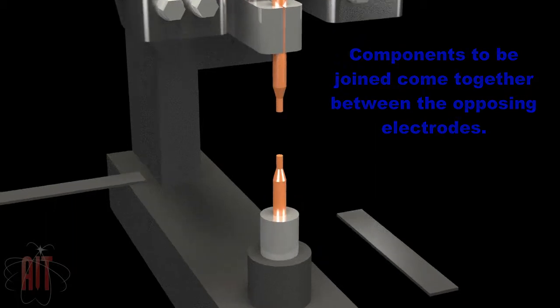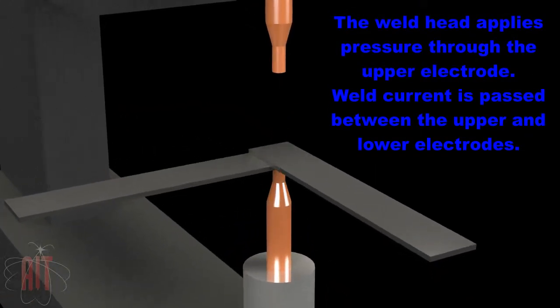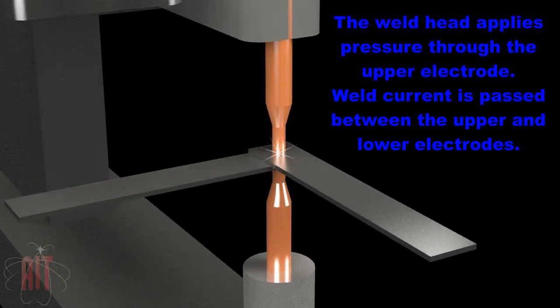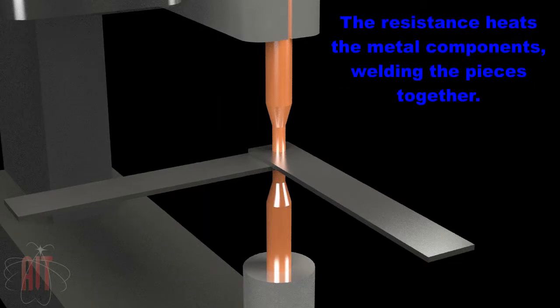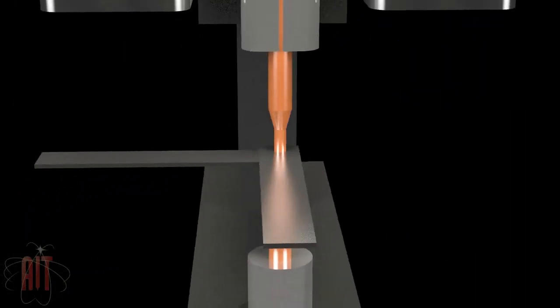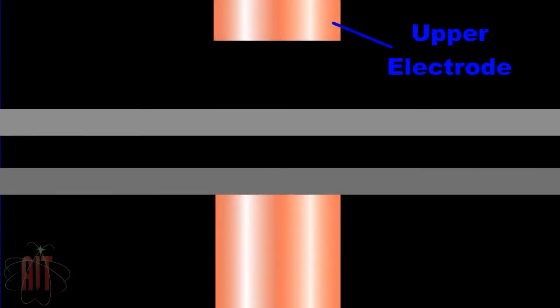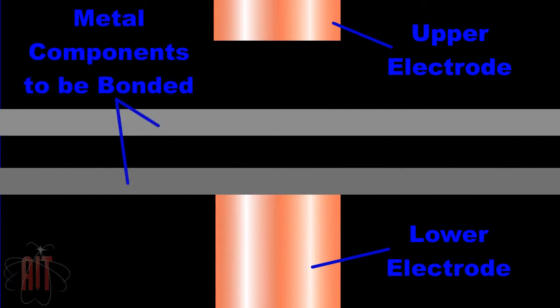Components to be welded are lined up over the bottom electrode. The weld head applies pressure through the upper electrode.